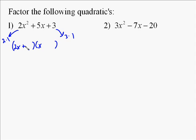The second thing you always do is figure out how to find the last term. In this case, you only have one option: 1 times 3. Now the question is where are you going to put them. So I put 2x plus 1 and x plus 3, and we test to see if it's correct.